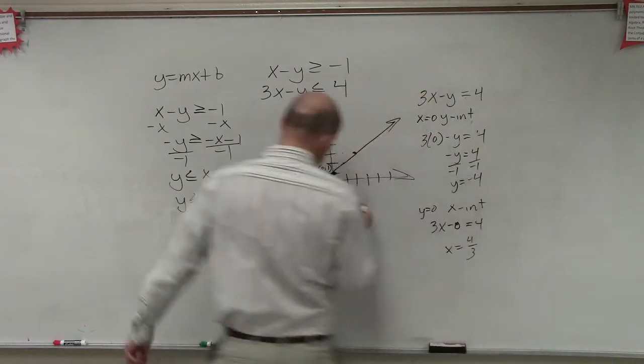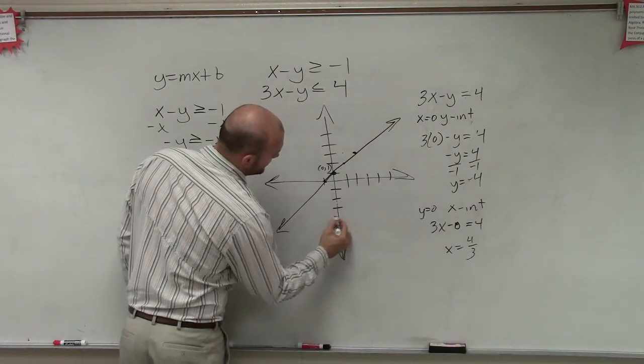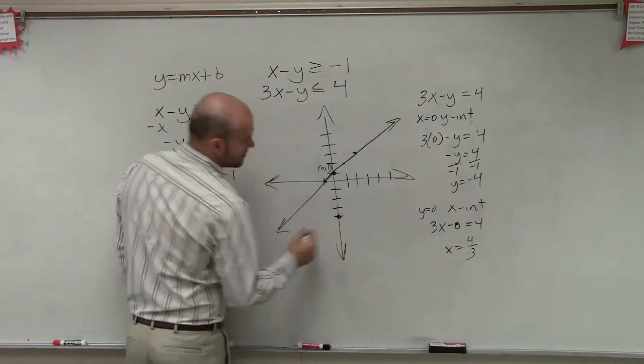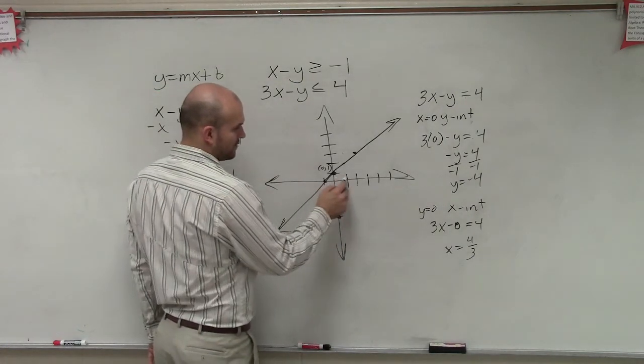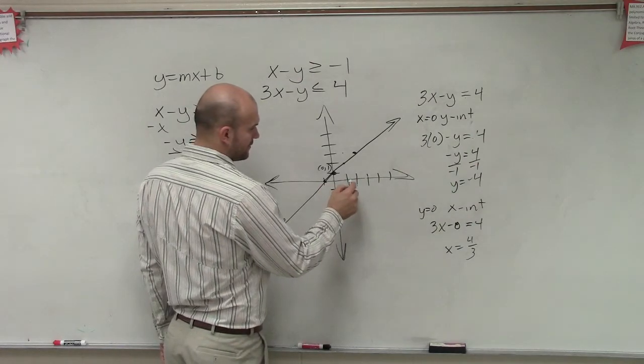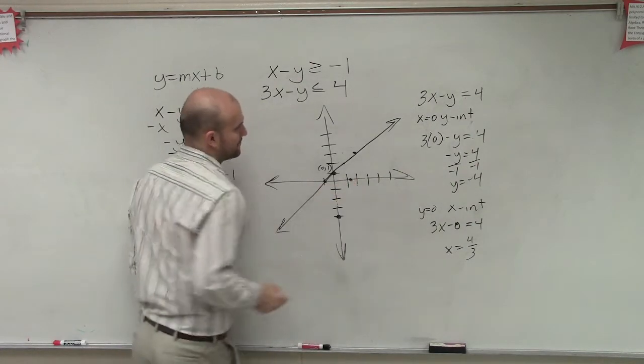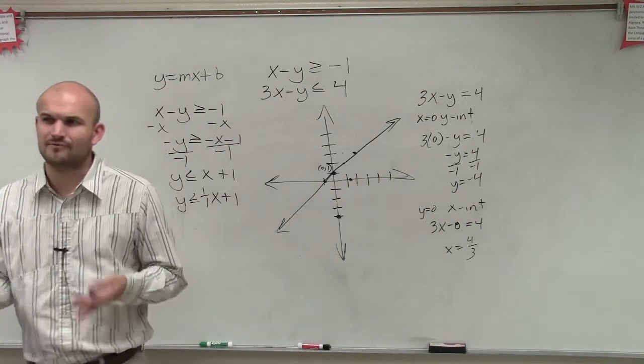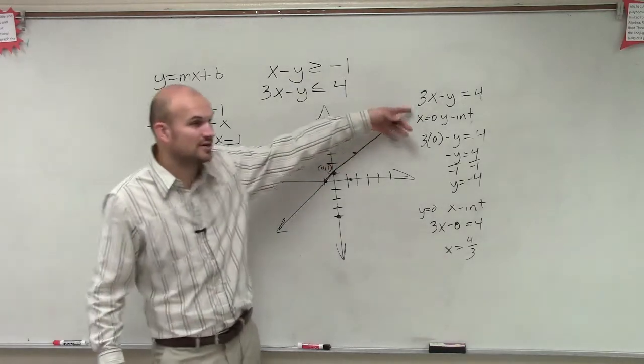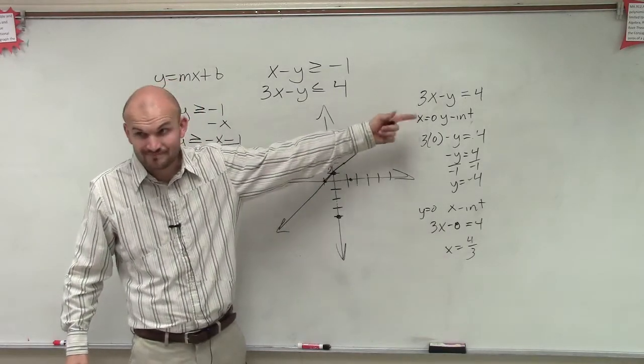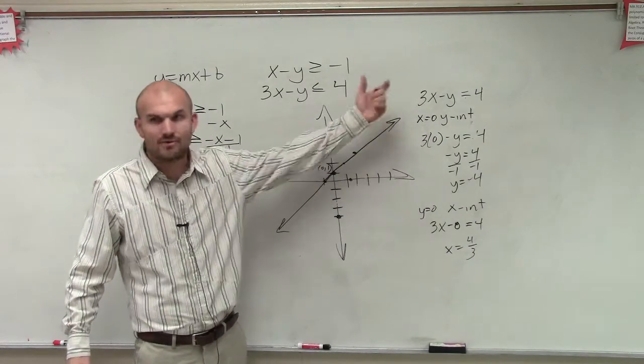So I go down to y, which is negative 4. 1, 2, 3, 4. And my x is going to be 4 thirds. So it'd be 1 and 1 third, which would be something like that. All right? Now remember, we're not very concerned. I always preferred putting this in the slope-intercept form so you guys could kind of always see that. However, if you guys like graphing this way, this is another way to graph it.